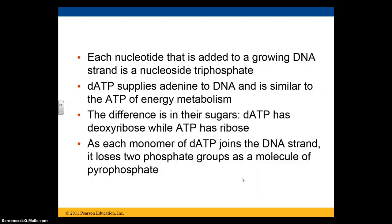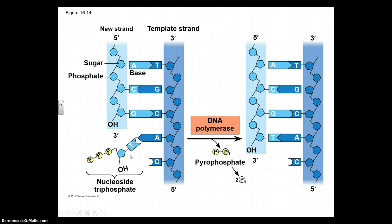Each nucleotide added to a growing DNA strand is a nucleoside triphosphate. dATP supplies adenine to DNA and is very similar to the ATP used for energy in metabolic processes, but the difference is in their sugar — dATP has a deoxyribose, while ATP has a ribose sugar. As each monomer of dATP joins the DNA strand, it loses two phosphate groups as a molecule of pyrophosphate. The nucleoside is bonded to the growing strand, the two inorganic phosphates are lost, and as a result the two bases are bonded together.